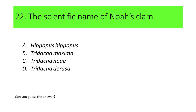Number 22. The scientific name of Noah's clump is: A. Hippopus hippopus, B. Tridacna maxima, C. Tridacna noe, and D. Tridacna derasa.